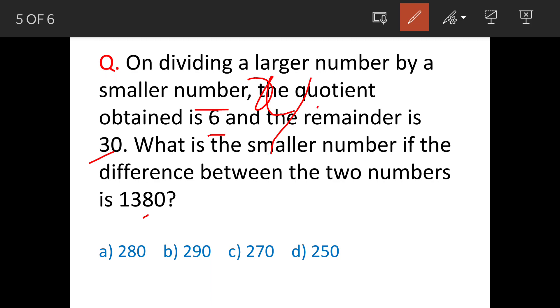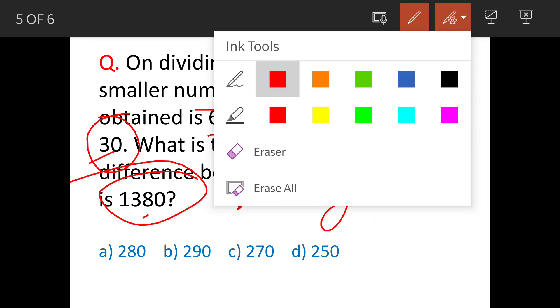This is the larger number and this is the smaller number. When we divide the numbers, we get quotient as 6 and remainder is 30. The difference between x and y, x minus y, is 1380. We'll solve this now.